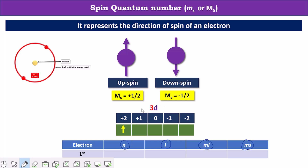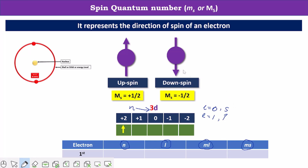The value of principal quantum number n can be calculated from the number in the orbital notation — this number represents the value of n. The letter d in the orbital notation suggests the value of l. When l is equal to 0, it represents s orbital. When l is equal to 1, it represents p orbital. When l is equal to 2, it represents d orbital. So in this case, the orbital is d orbital, therefore the value of l is 2.